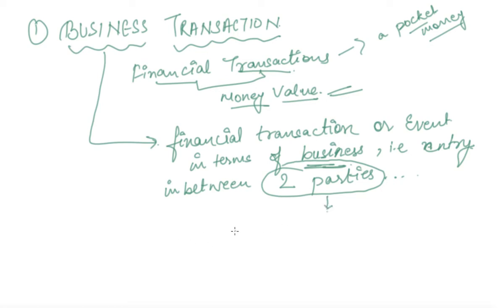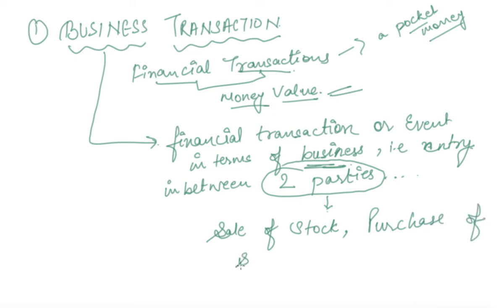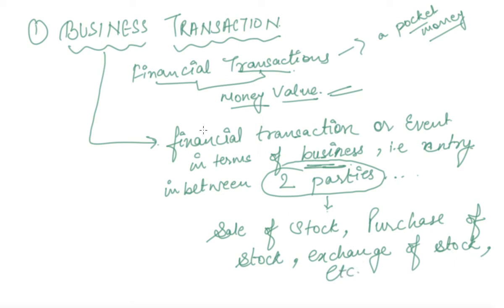So in case of business transaction, transactions that take place between two business parties are such as sale of stock, purchase of stock, exchange of some product, etc. So what we mean by business transaction is any type of financial transaction between businesses — that is, between two different business parties.